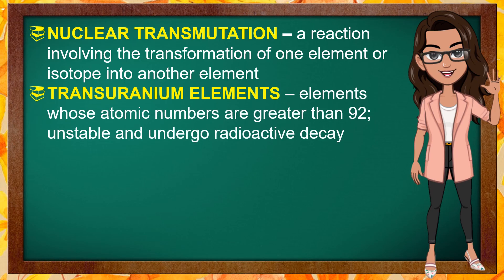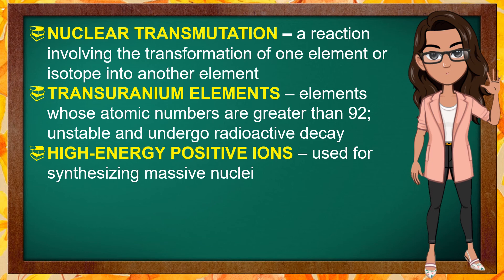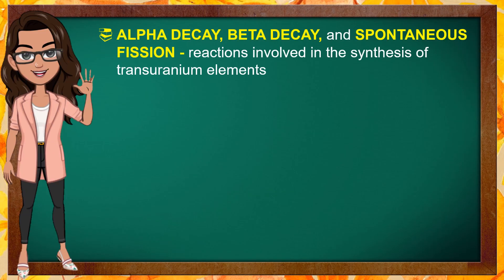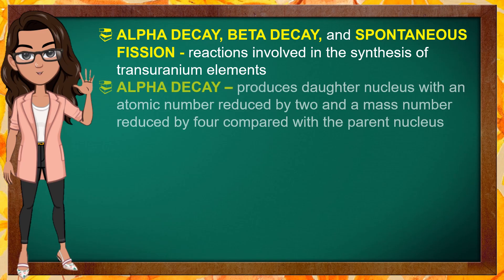Transuranium elements are elements whose atomic numbers are greater than 92. They are all unstable and undergo radioactive decay. High-energy positive ions, which include the use of deuterons, carbon nuclei, and ions, are used for synthesizing massive nuclei. Nuclear decay reaction is a reaction in which the nucleus of an element emits radiation and transforms into another nucleus.